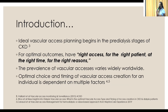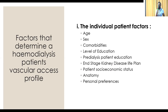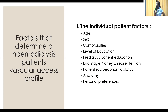For optimal outcomes, we need to have the right access for the right patient at the right time for the right reasons. Because of this, the prevalence of the different accesses used varies worldwide, and the optimal choice and timing of vascular access creation for each individual is dependent on multiple factors. We look at both individual factors and system factors. We need to determine the patient's age — for older patients it might be more difficult to get an AV fistula because of comorbidities such as atherosclerosis of their vessels.